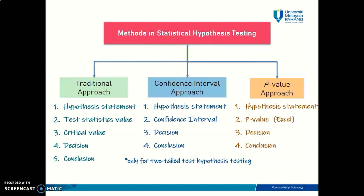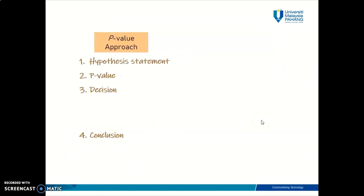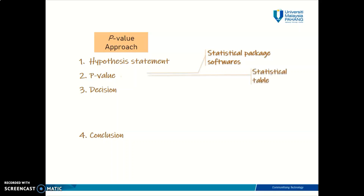There are many ways to find a p-value. Recently, almost all computer statistical packages such as Microsoft Excel, SPSS, Minitab, eView, and R language can provide you with the p-value in the output when you use them to conduct your hypothesis testing. You can also find the p-value using a statistical table or even by using your calculator. In this course, we're going to be using Microsoft Excel to find our p-value.